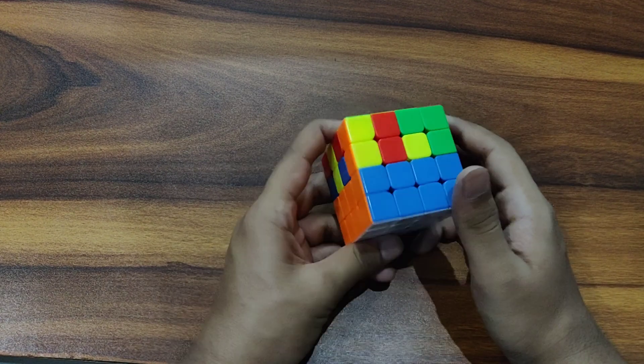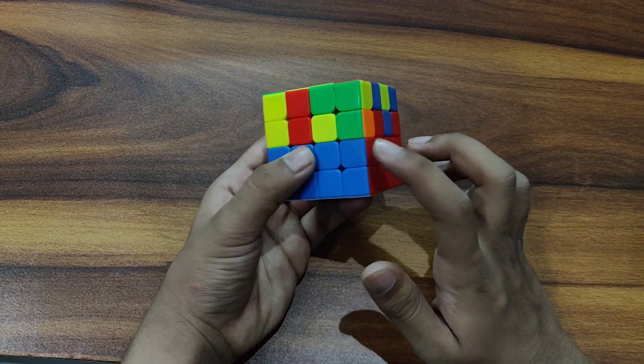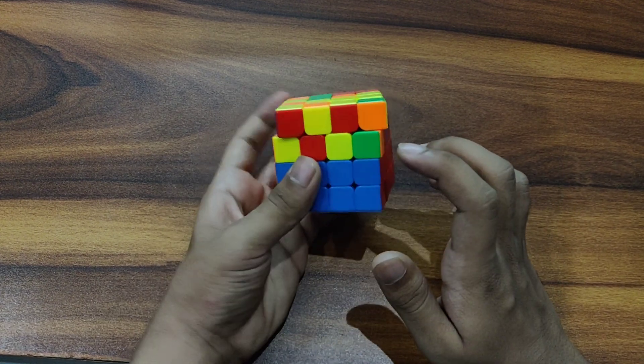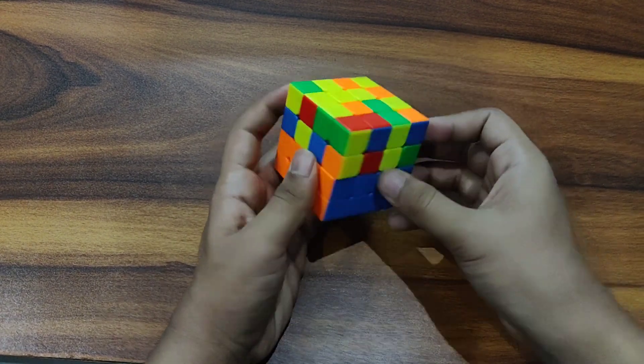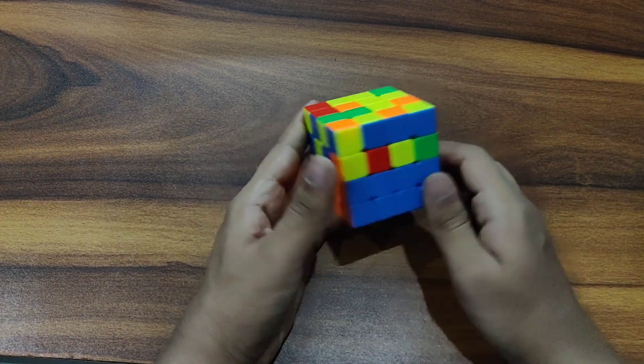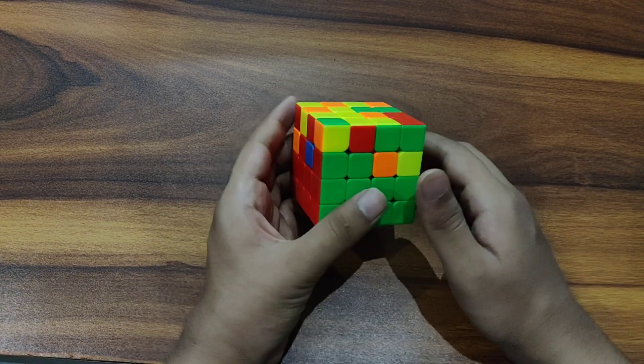But just you need to keep in mind that you have to solve with only the edge which is here, not this one, because this one will not pair. It is supposed to come here. It's the third layer edge. So this way you can solve the second layer.